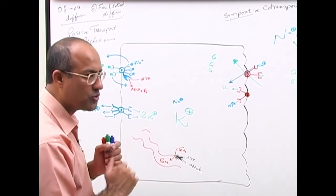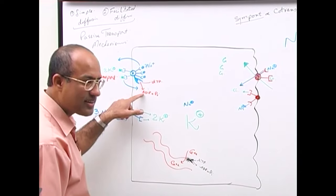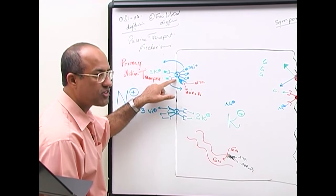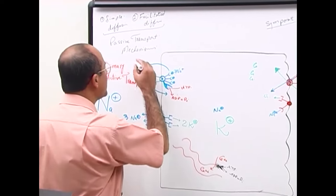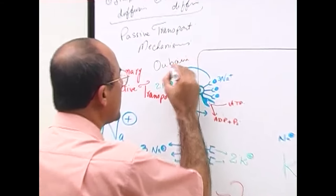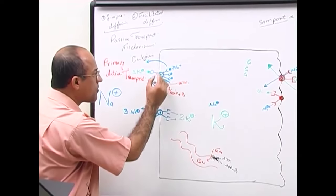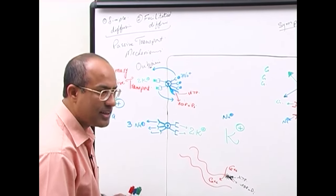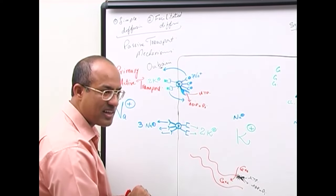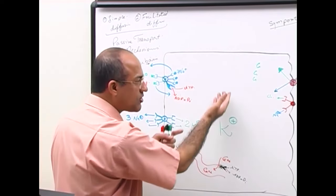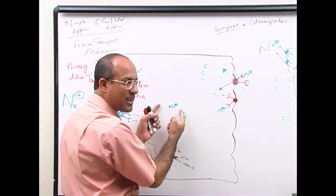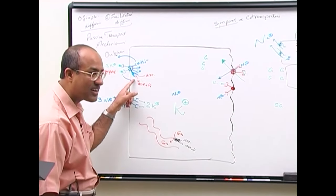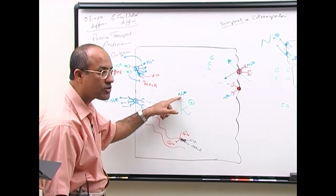Classical proof of this mechanism came from experiments using ouabain, a toxic substance that specifically makes the sodium-potassium ATPase dysfunctional. When cells were exposed to ouabain, the sodium-potassium ATPase stopped working and stopped utilizing ATP. Intracellular sodium levels rose, sodium could no longer move into the cell through the co-transporter, and therefore glucose could not be transported in either.